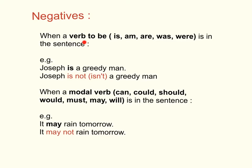如果我们见到verb to be在一个句子里面，那我们怎样加呢？For example: Joseph is a greedy man. Joseph是一个贪心的人，greedy. 如果我们要说他不是一个贪心的人，那我们首先找出那个verb to be. 这个句子里面的verb to be就是is，然后在is字后面加一个not字，就变成Joseph is not，或者简写isn't a greedy man. Joseph不是一个贪心的人。